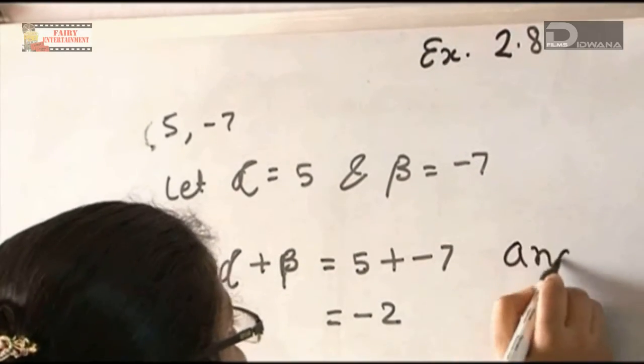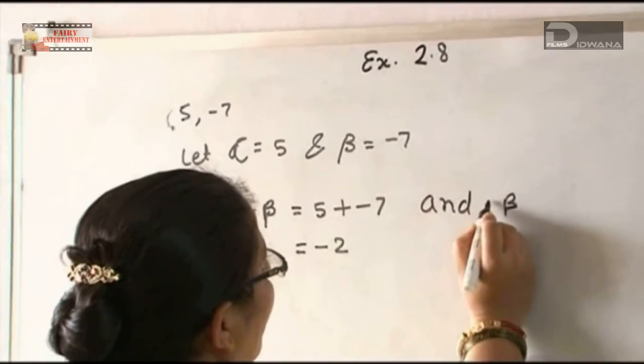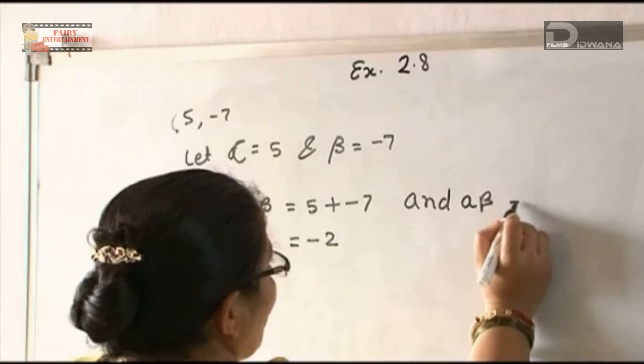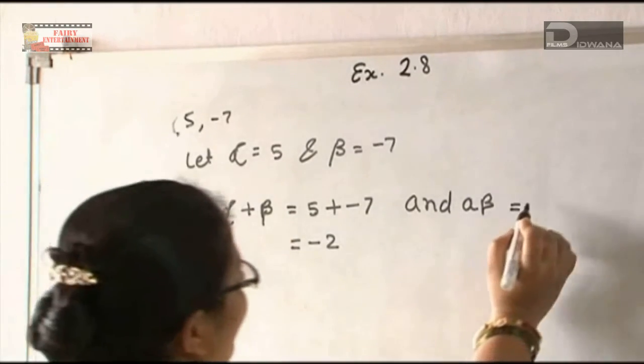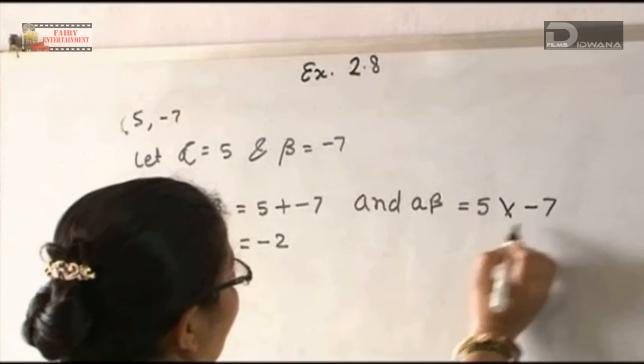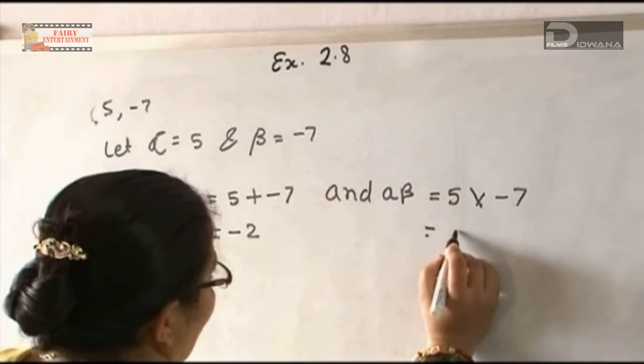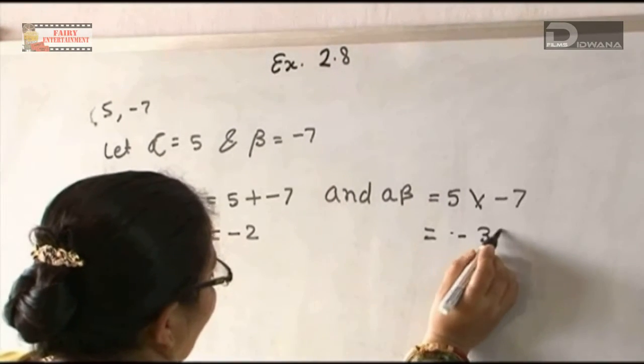αβ equals: the value of α is 5 and β is -7. 5 times 7 is 35, so -35.